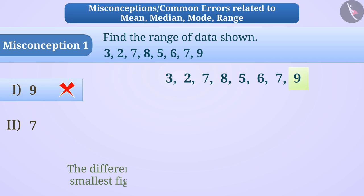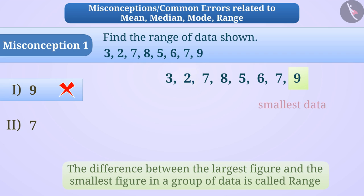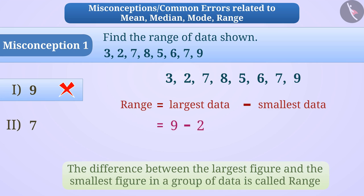The difference between the largest figure and the smallest figure in a group of data is called range. That is, the difference is obtained by subtracting the smallest data from the largest data in the group of data. So the range will be 9 minus 2 is equal to 7. That is, option 2 will be the correct answer.